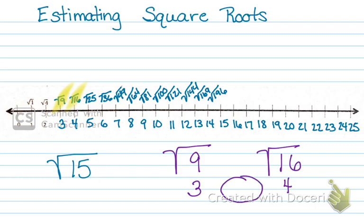Okay, so we would write our answer between the square root of 9 and the square root of 16, which is between 3 and 4. So that's how we would solve it for our examples today.